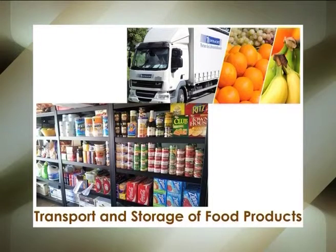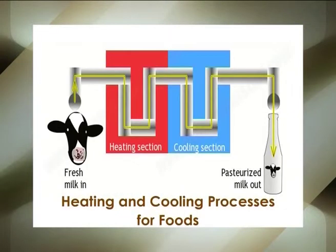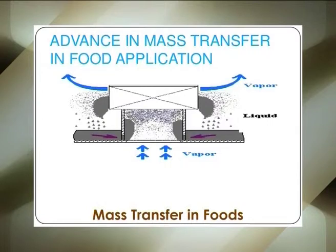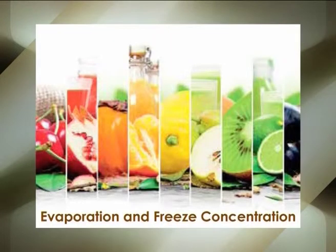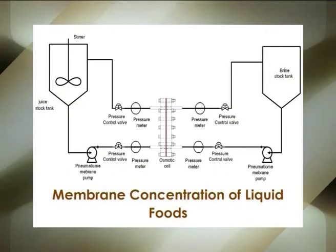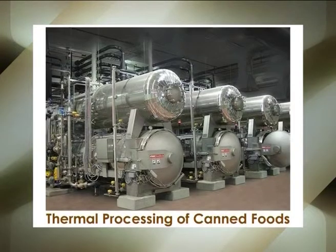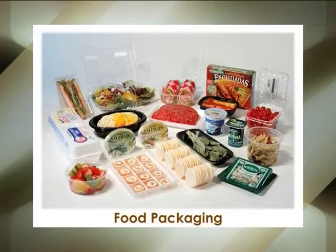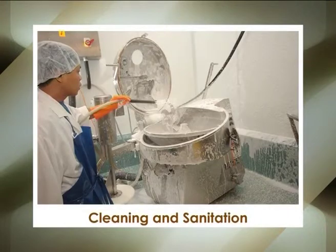Number fifth, heating and cooling processes for foods; number sixth, food freezing; number seventh, mass transfer in foods; number eighth, evaporation and freeze concentration; number ninth, membrane concentration of liquid foods; number tenth, food dehydration; number eleventh, thermal processing of canned foods; number twelfth, extrusion processes; number thirteenth, food packaging; and number fourteenth, cleaning and sanitation.